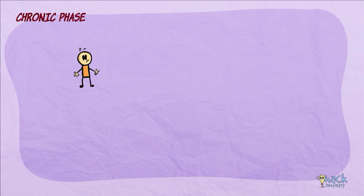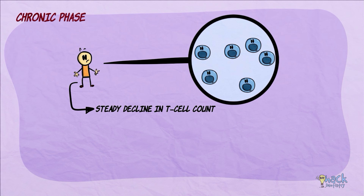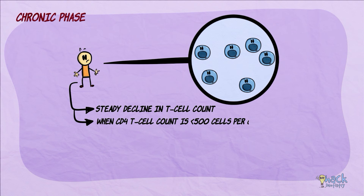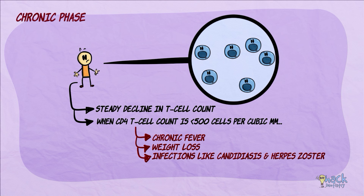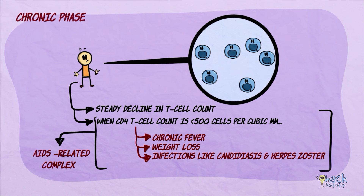During the chronic phase, there is a steady decline in CD4 T-cell count in the lymph nodes and circulation. When the CD4 T-cell count falls below 500 cells per cubic millimeter, certain patients show chronic fever, weight loss, and develop infections like candidiasis and herpes zoster. This period is called AIDS-related complex.